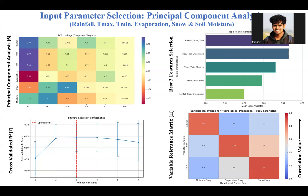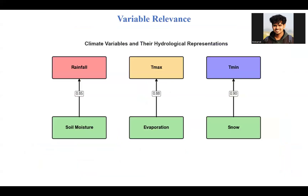The last graph shows the variable relevance matrix, which is actually a correlation value matrix, showing that rainfall is 85% correlated with soil moisture, maximum temperature is 85% correlated with evaporation, and minimum temperature has 90% correlation with snow. From the analysis, it can be said that rainfall is representative of soil moisture, maximum temperature is representative of evaporation, and minimum temperature is representative of snow.